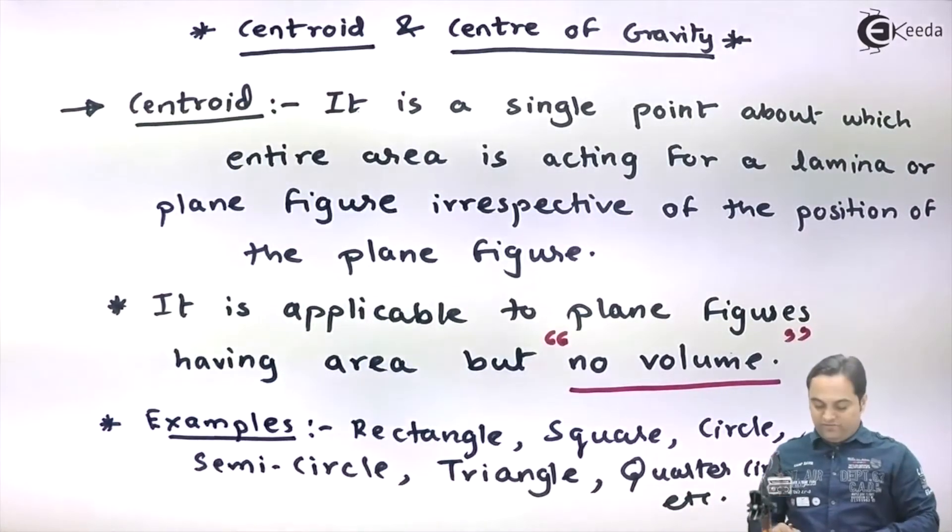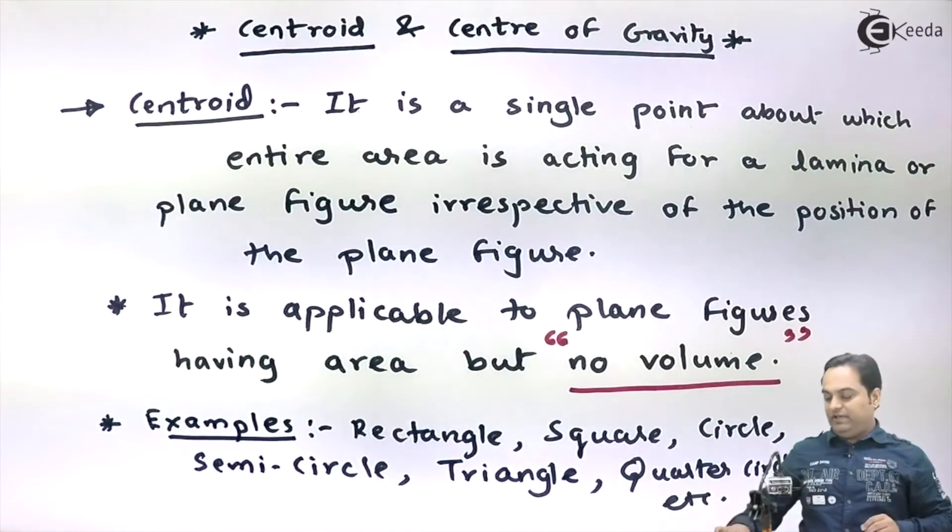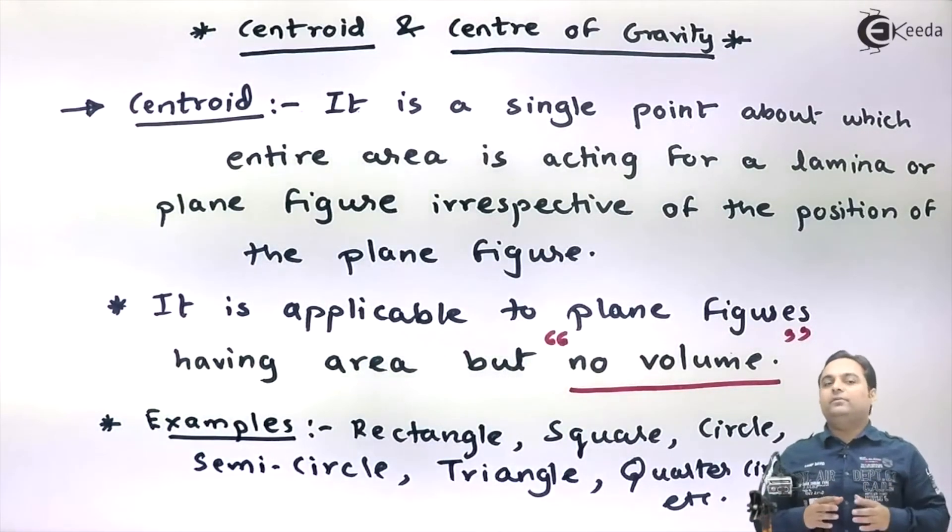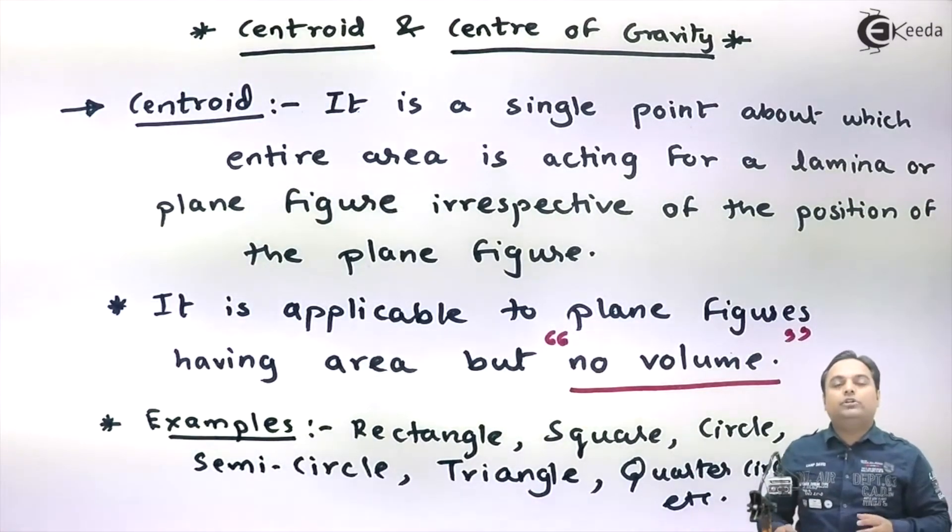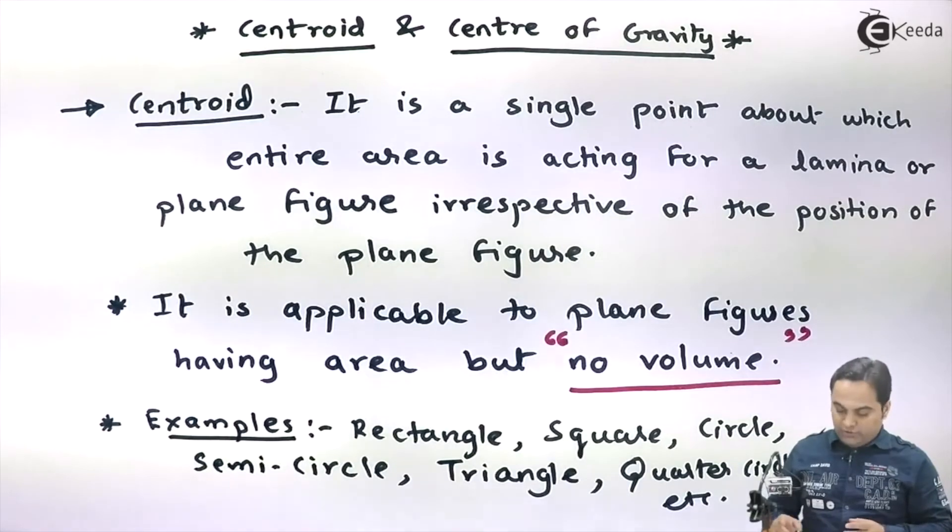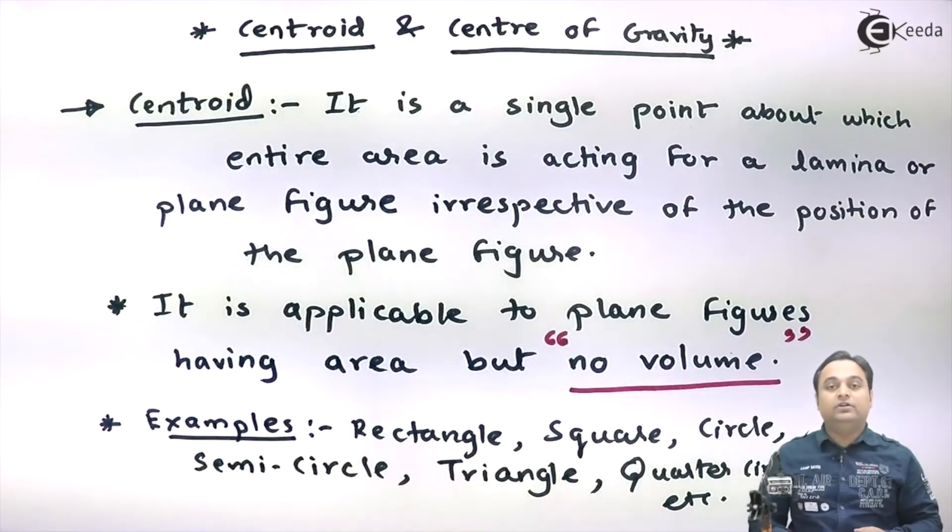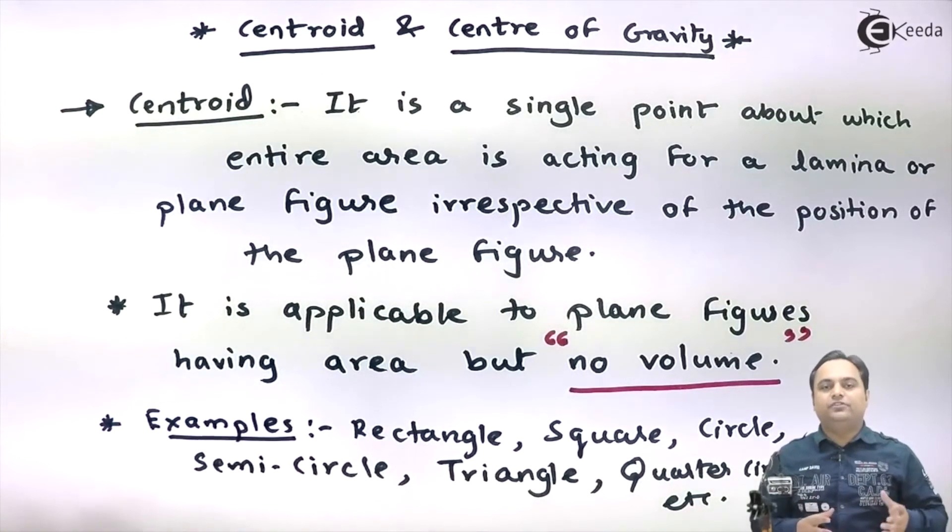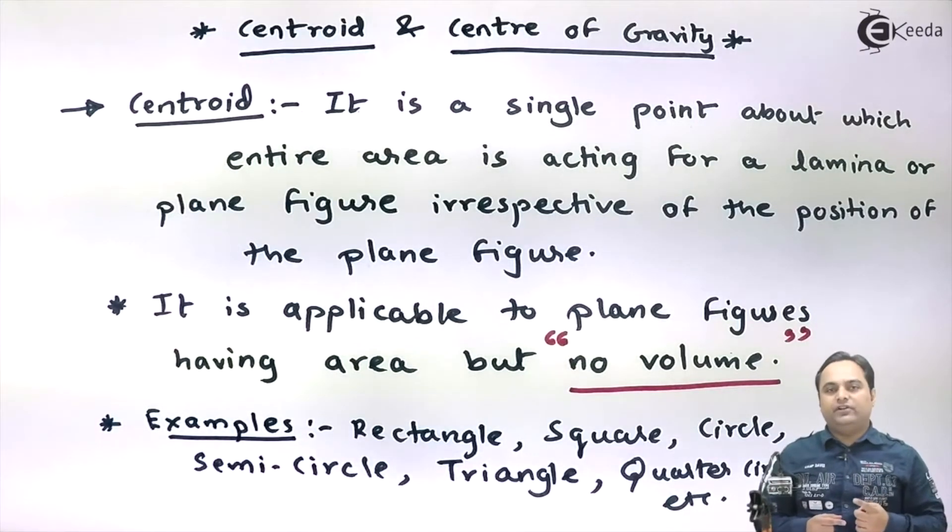So here I have given some examples of plane figures. It means whenever we will calculate the centroid, we will be calculating the centroid only for these figures, or if it is possible you can combine, like for example you can combine rectangle and semicircle, then it becomes a composite figure.